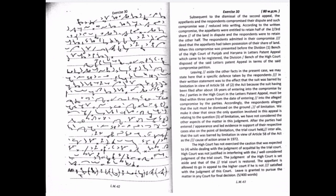Leaving aside the other facts in the present case, we may state here that a specific defense taken by the respondents in their written statement was to the effect that the suit was barred by limitation in view of Article 58 of the act, because the suit having been limited after about 18 years of entering into the compromise by the parties in the High Court in the letters patent appeal, must be filed within 3 years from the date of entering into the alleged compromise by the parties. Accordingly, the respondents alleged that the suit must be dismissed on the ground of limitation.